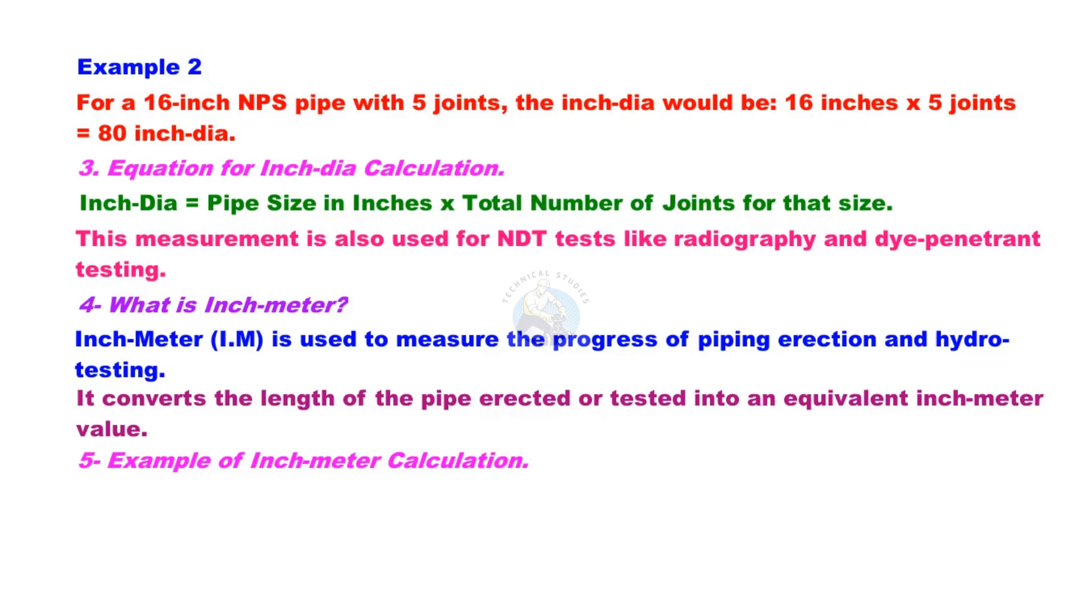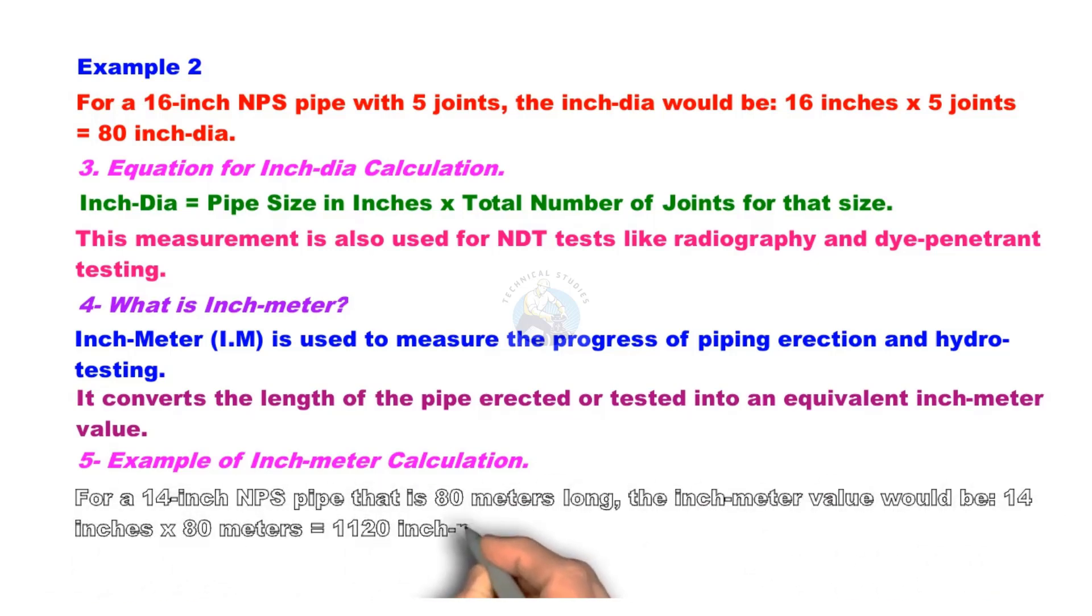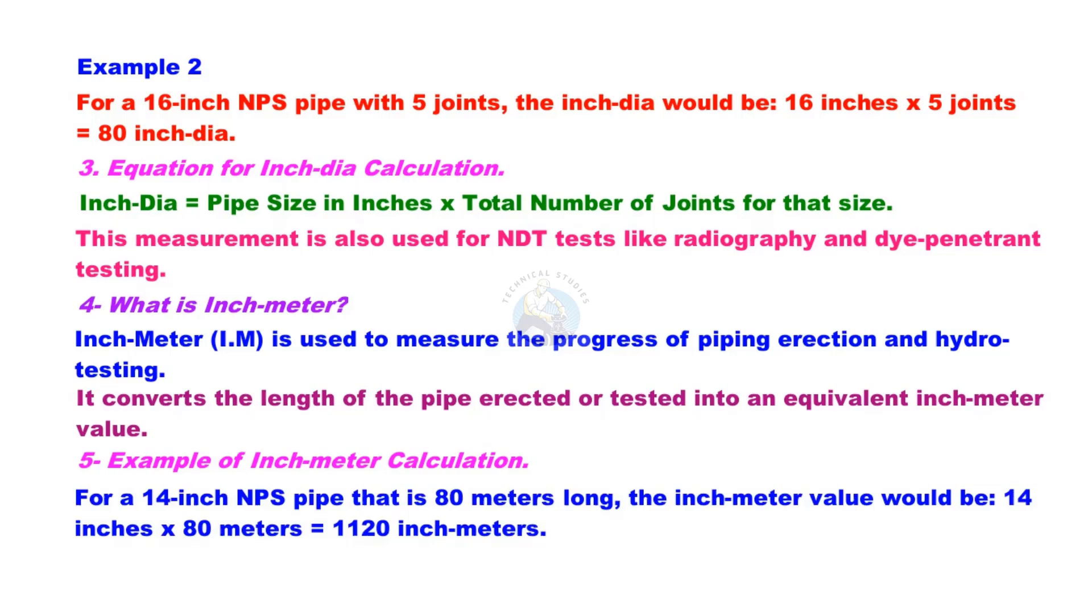Here are some examples for inch-meter calculations. For a 14-inch pipe that is 80 meters long, the inch-meter value would be 14 inches multiplied by 80 meters, equal to 1,120 inch-meters.